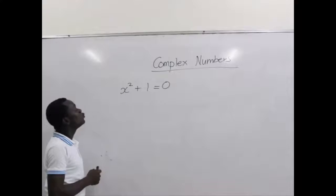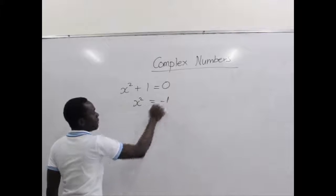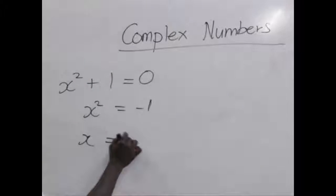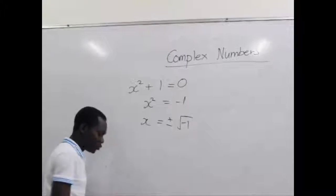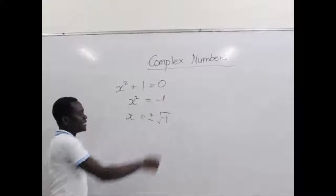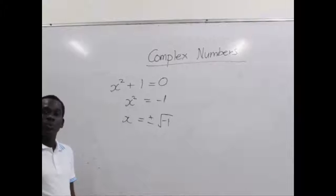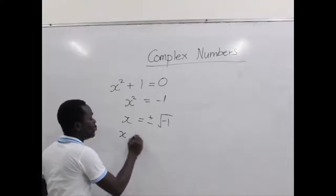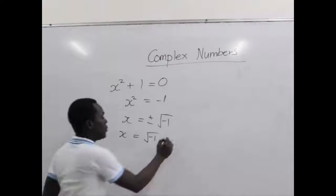So, he went two steps further — making x squared the subject, giving us x squared equals negative 1. Now, to find x, we know we have to find the square root of negative 1, which may be either a positive square root of negative 1 or a negative square root of negative 1. But there is no way we can find the square root of a negative number.